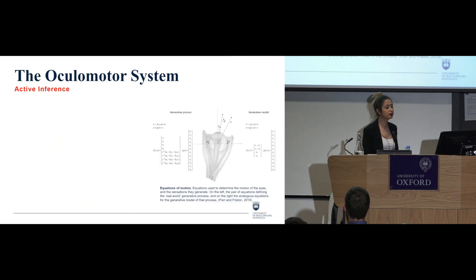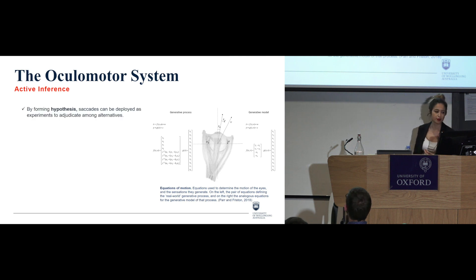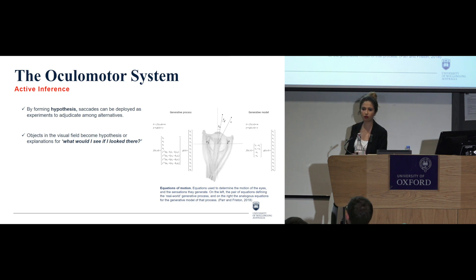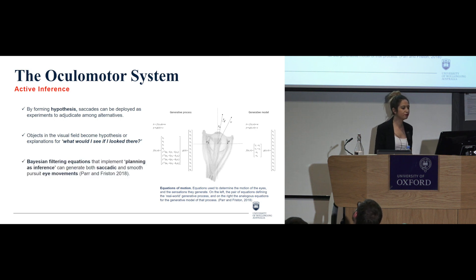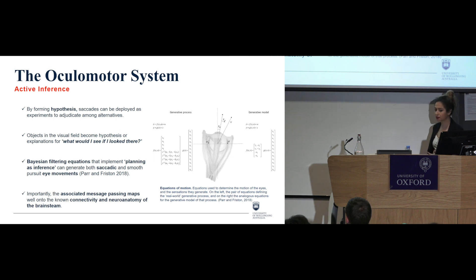Now, moving at how we could explain this relation between perception and action through active inference, we can say that, well, by forming hypotheses, these saccades can be deployed as experiments to adjudicate among alternatives. So unpacking this a little bit, objects in the visual field become hypotheses or explanations that take the form of something like, what would I see if I looked there. So Bayesian filtering equations can be used and implemented to planning as inference, which can generate both saccadic and smooth pursuit eye movements. Importantly, the associated message passing will map pretty well onto the known connectivity and neuroanatomy of the brain stem, which I obviously didn't and don't have time to explain here.